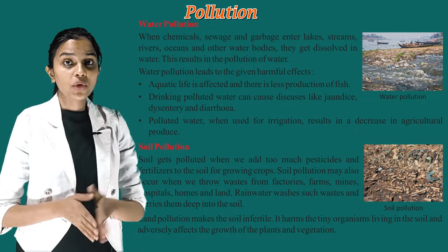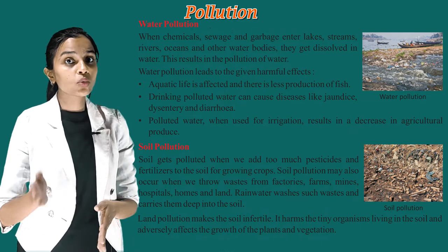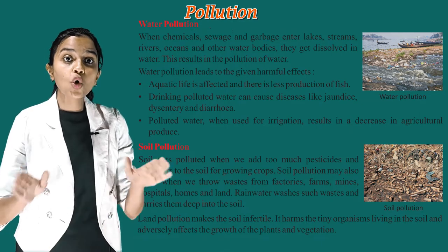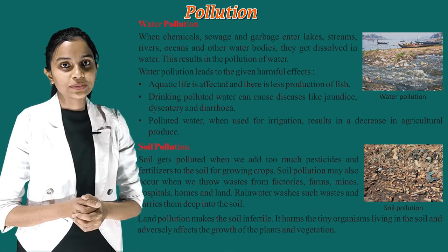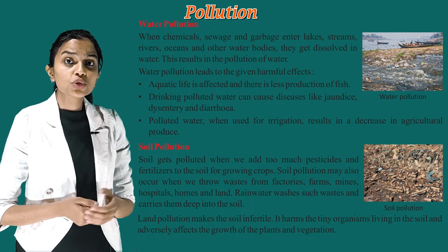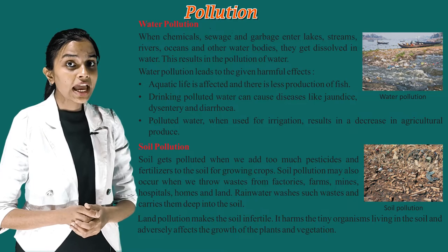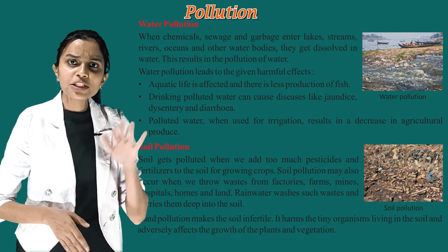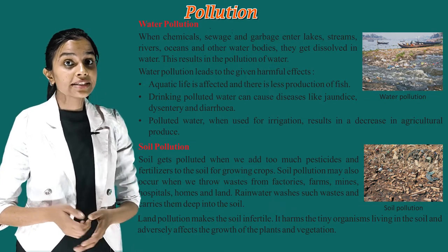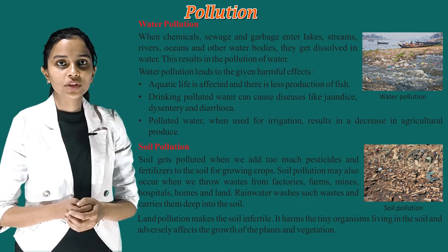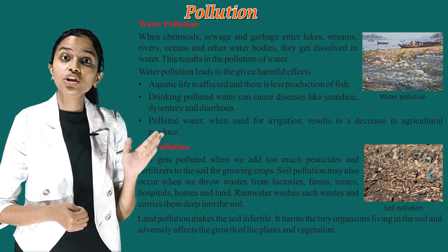Now children, we will see water pollution. When chemicals, sewage and garbage enter lakes, streams, rivers, oceans and other water bodies, they get dissolved in water, resulting in water pollution. Water pollution leads to harmful effects: aquatic life is affected and there is less production of fish. Drinking polluted water can cause diseases like jaundice, dysentery and diarrhea. Polluted water when used for irrigation results in decreased agricultural produce.